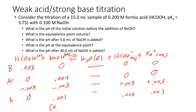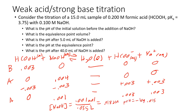Since we have excess strong base, we look at NaOH to find pH. We have 0.001 moles of NaOH in a total volume of 0.055 liters (15 mL plus 40 mL). That gives a concentration of 0.0182 molar. pOH equals negative log of 0.0182, giving pOH equals 1.74. So pH equals 14 minus 1.74, which gives 12.26 — the exact same answer as in the strong acid titration case with the same concentrations.